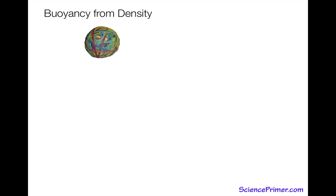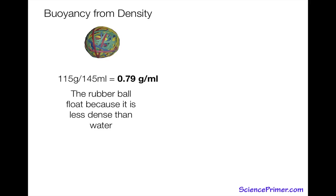Before wrapping up, I want to make a more direct link between buoyancy and density. Both the rubber ball and lead weight have a density, and since we know their mass and volume we can calculate it. The rubber ball has a mass of 115 grams and a volume of 145 milliliters; dividing gives a density of 0.79 grams per milliliter. Since this is less than 1 — the density of water — the rubber ball floats, without needing all the previous calculations.